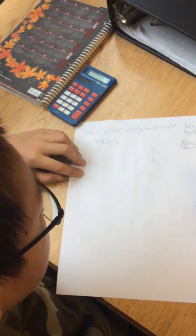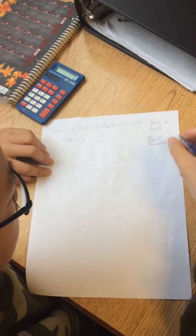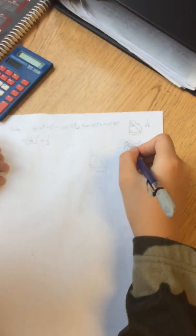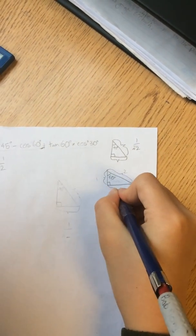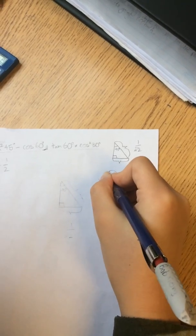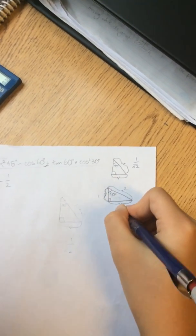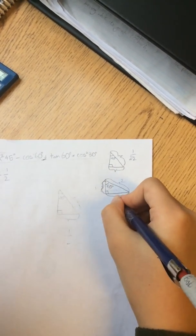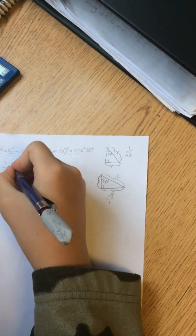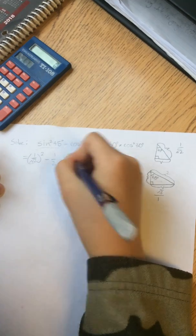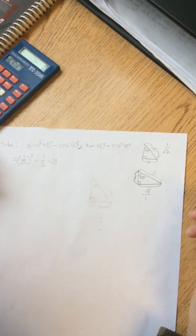Tan 60 degrees times cosine 30 degrees. So we can use this again. The tan of 60 degrees would be this over this. And as we know, this ratio between these two is square root of 3 over 1. So then it will be minus square root of 3 because square root of 3 divided by 1, that's just square root of 3.